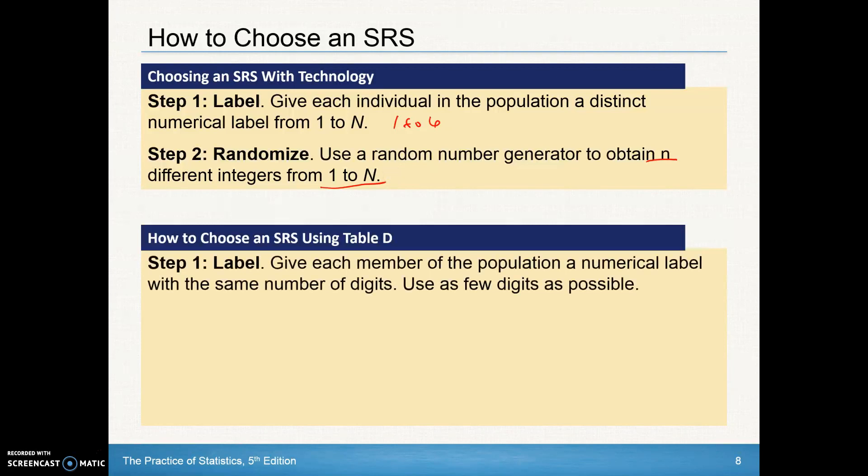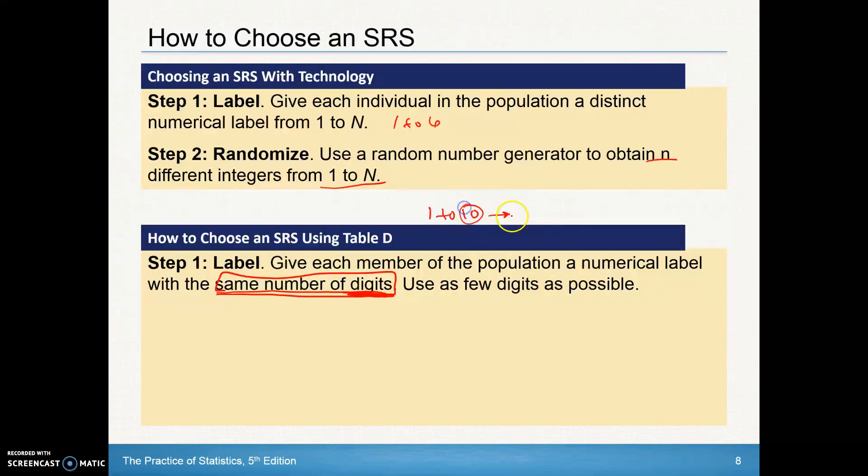Using table D, what you're going to do is give each member of the population a numerical label with the same number of digits. So if I was going to assign something from 1 to 10, I would have each of those be two digits long because 10 has two digits to it.